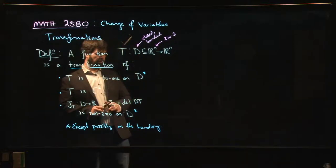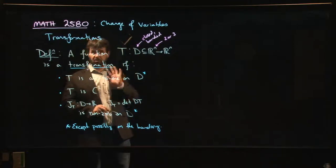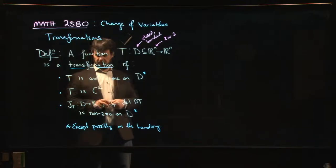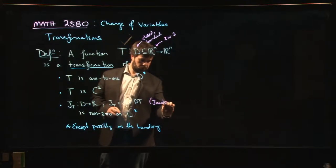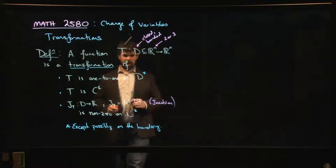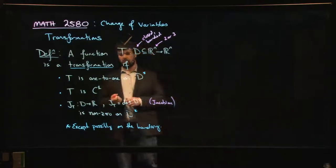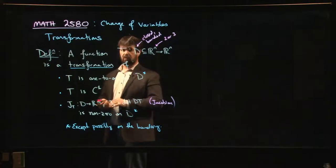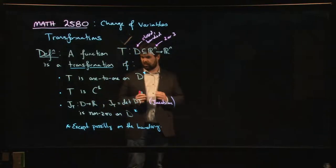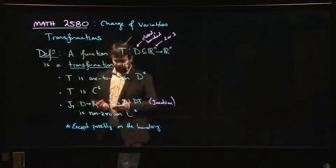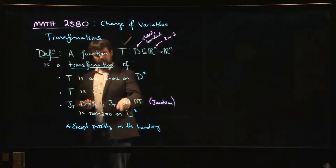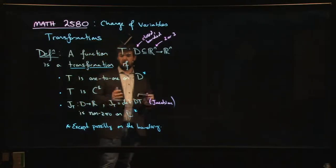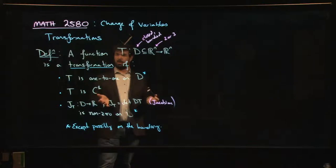And there's this condition on this function here. So we mentioned this in the context of talking about the spherical coordinate change of variables, which by the way is an example of a transformation. That this function J sub T, this is known as the Jacobian of the transformation, and it's the function that you obtain when you take the determinant of the matrix of partial derivatives for your transformation. So you ask that this determinant be non-zero.